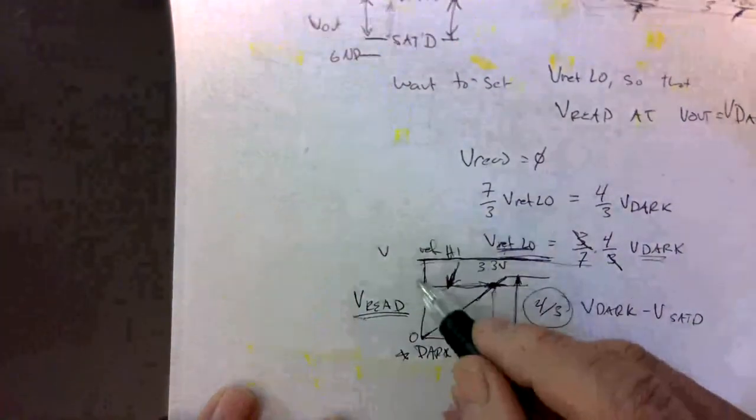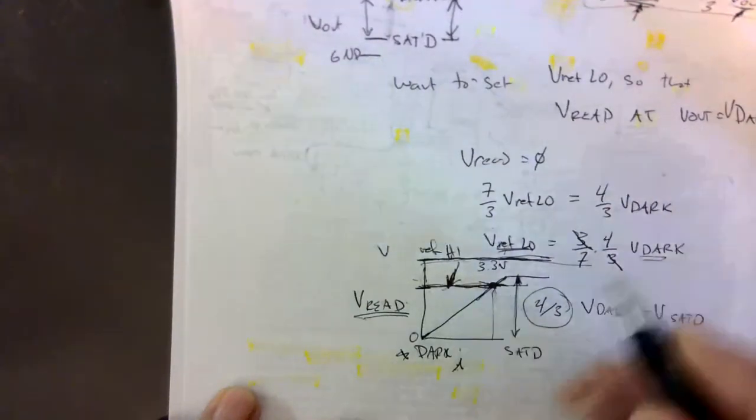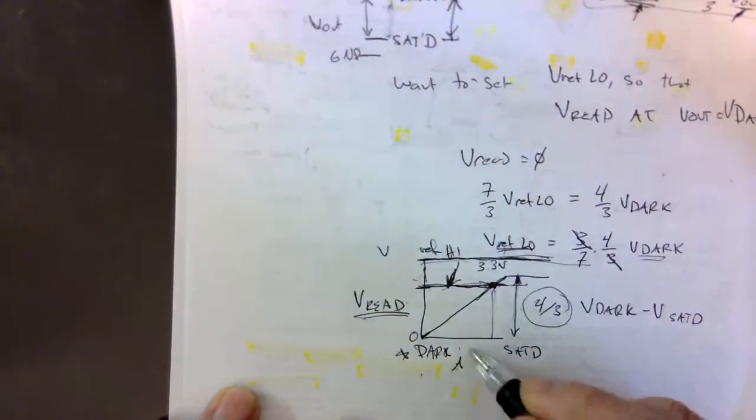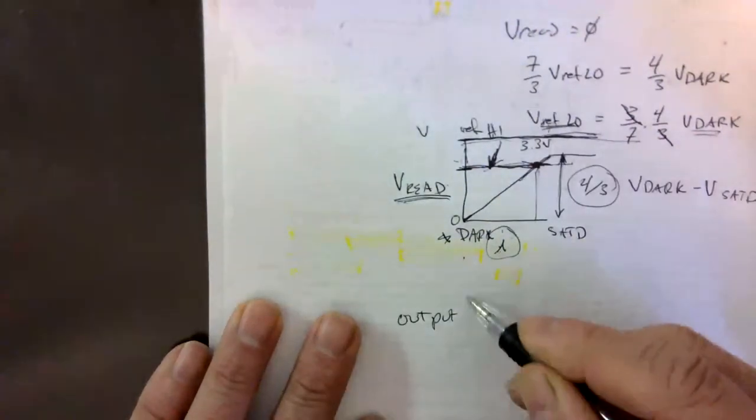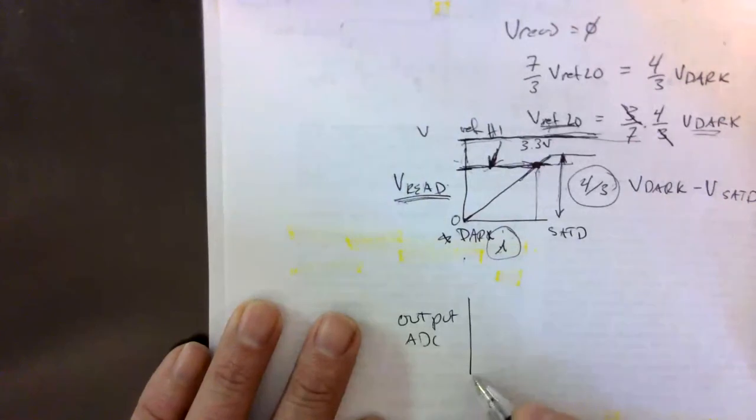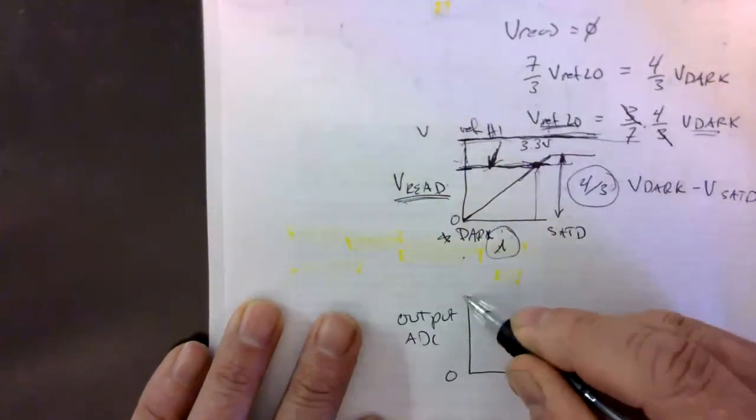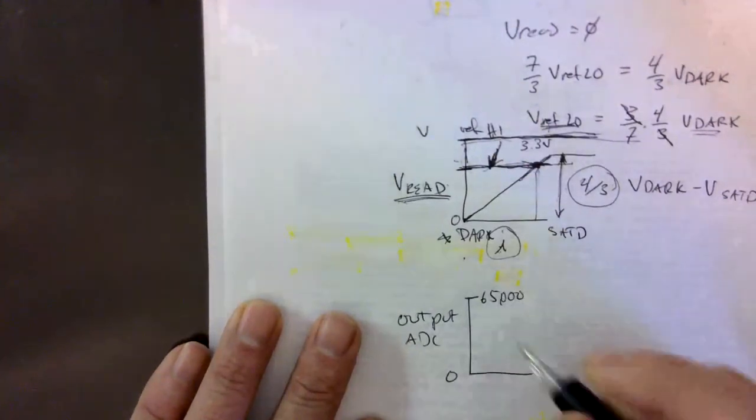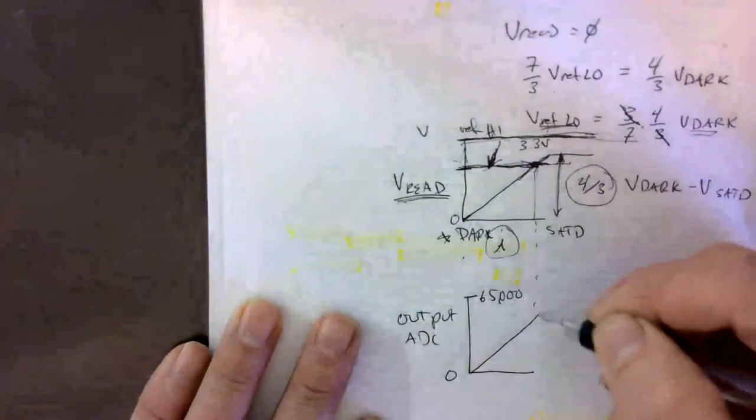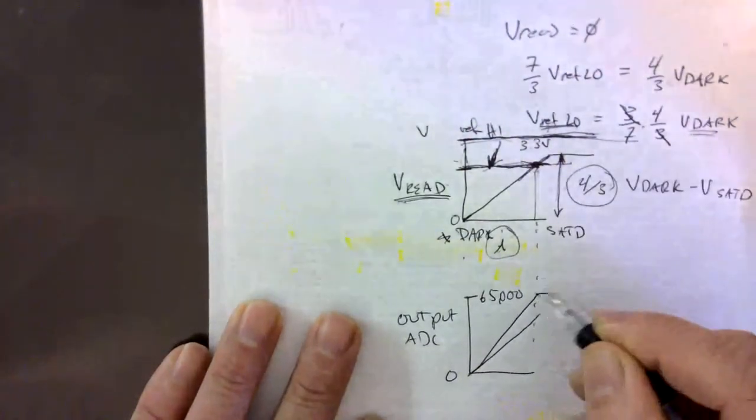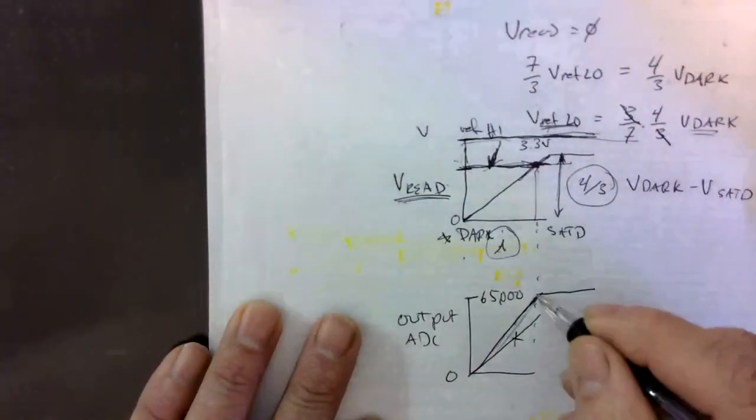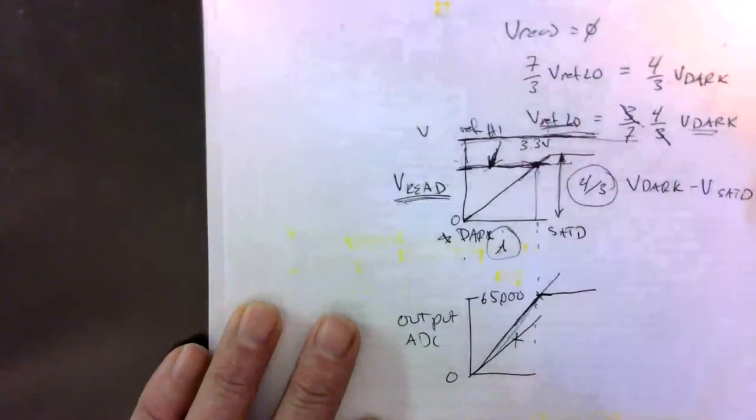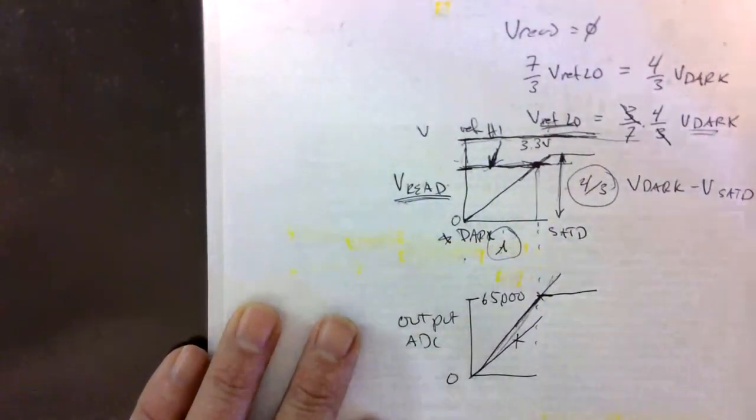So if we set our V ref high here, then we can measure intensity versus the output from our ADC. We will go from zero to about 65,000 at this point, and then it is flat. So we want to make sure that 65,000 is on the linear part of the output. That is all I am trying to get to.